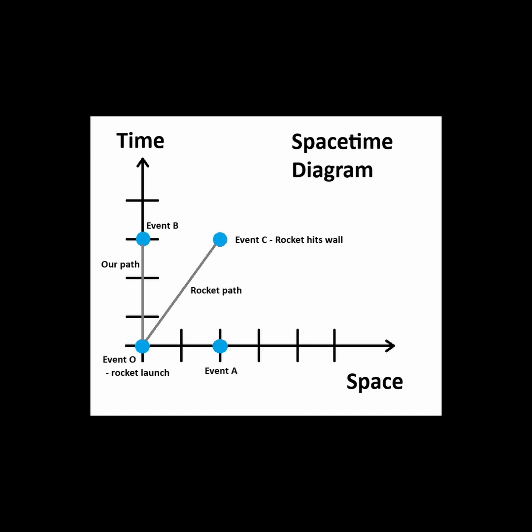At the same time, our launched rocket is moving away from us, but time is also moving forward. Thus, the rocket moves both away in space, but also forward in time.